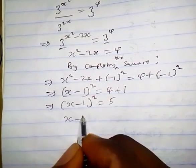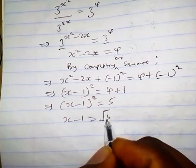And we take the square root of both sides. We have s minus 1 equals square root of 5 plus or minus.